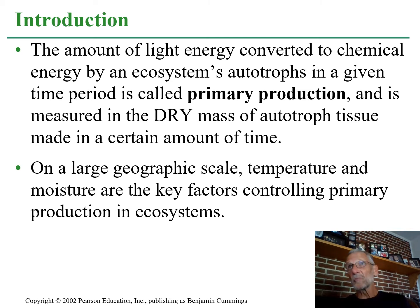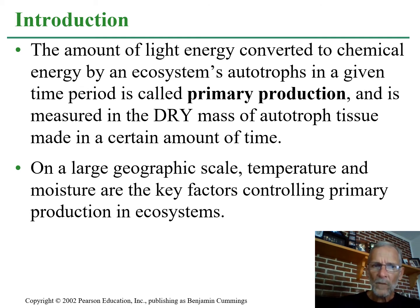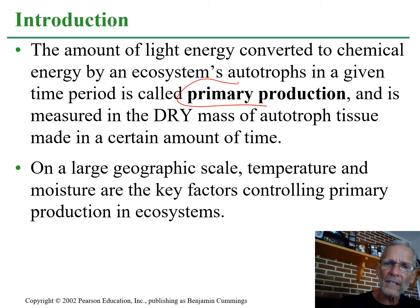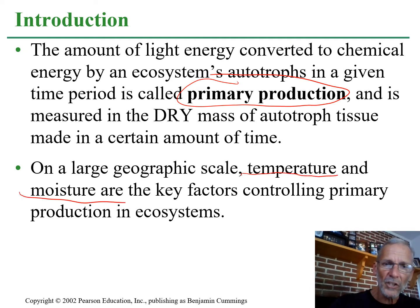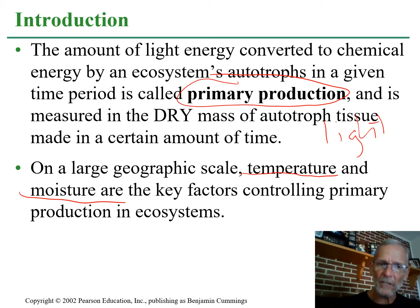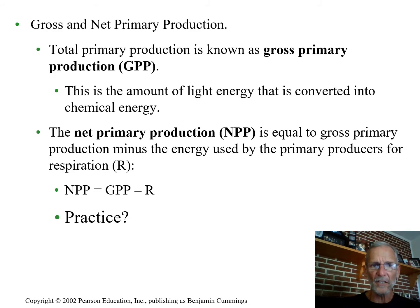Looking more specifically at primary production: it includes things like photosynthesis and protein synthesis — producing organic molecules, being the first organisms to do so. That's what autotrophs do. The two biggest key factors for photosynthesizers are light, and on a large geographic scale, temperature and moisture.